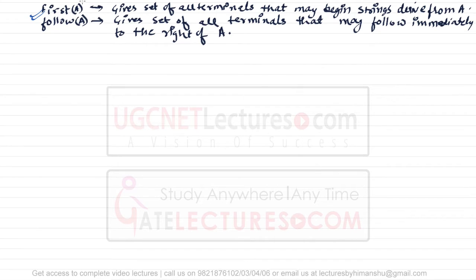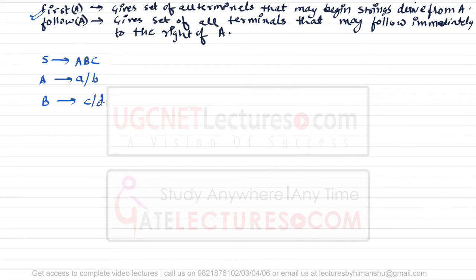Consider the following grammar: S derives A B C, where A derives small a or small b, B derives small c or small d, and C derives small e or small f. This is the grammar we have.